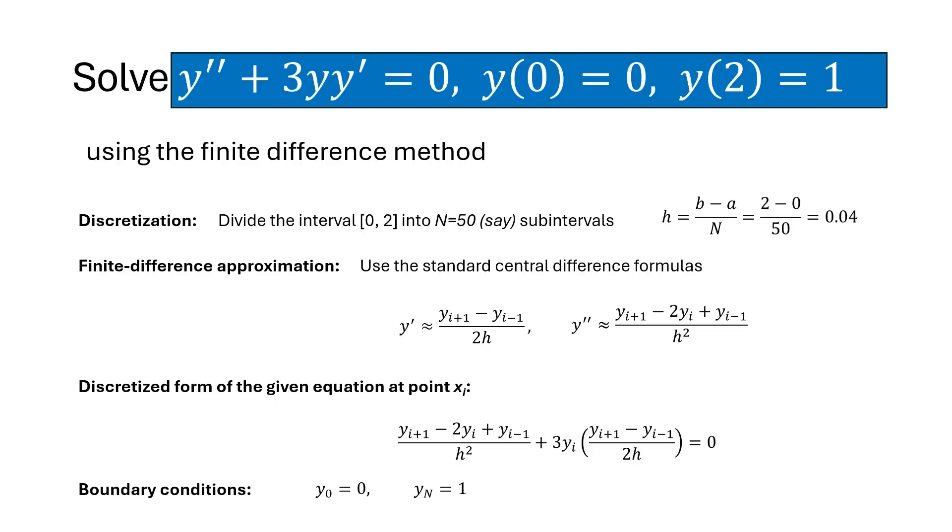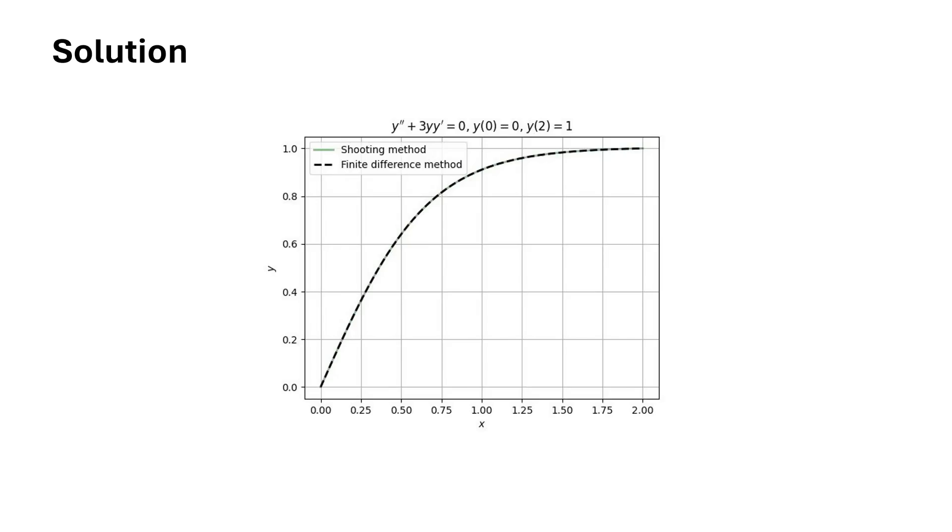Now we can use a method like Newton's method to solve this non-linear system iteratively. Here we plot numerical solutions for both the shooting method that we discussed in the previous video and the finite difference method. For the finite difference solution in this case we use n equal to 50.